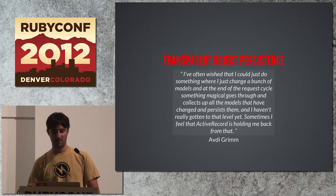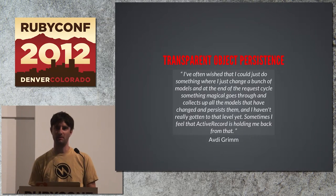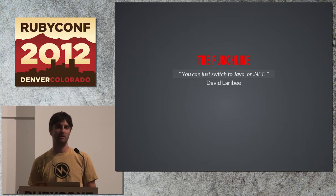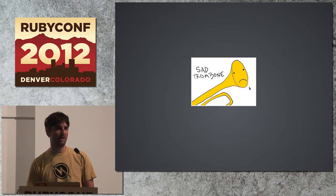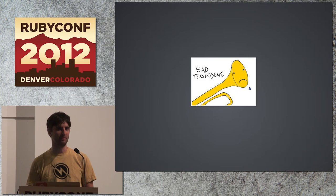He said he hasn't really gotten to that level yet. Sometimes he feels like ActiveRecord is holding him back. This was on a Ruby Rogues episode with David Larrabee, talking about domain-driven design. David chimed in with the punchline: 'Well, you can have that — you just have to switch to Java or .NET.' And I was driving, and that made me really sad, because that's not actually true. We've had this awesome Maglev product, but it doesn't quite have a lot of knowledge or adoption yet.